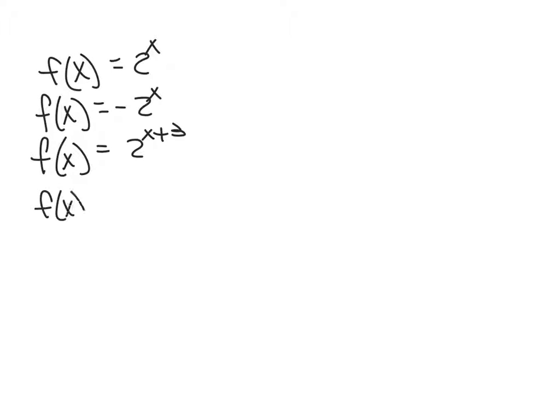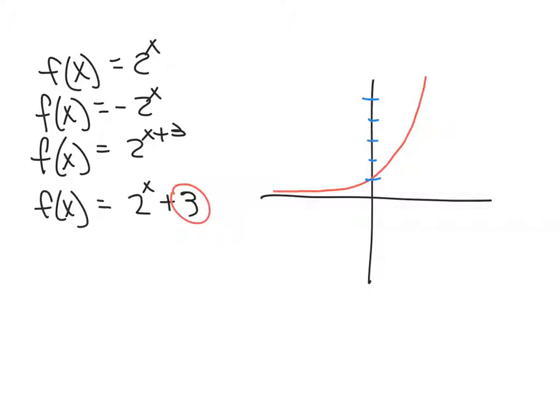If we have f of x, and we say we're going to take our 2 to the x and we're going to add 3 to the entire number, not just to the x like we did up here, what happens? It translates our graph up 3 units. So here's our graph, our original graph, and this 3 means that it shifts it from 1 up 3 units.